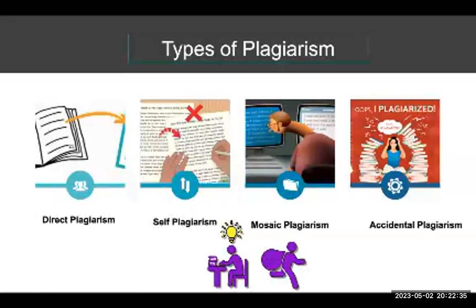The first kind is direct plagiarism. Direct plagiarism is the word-for-word transcription of a section of someone else's work without attribution and without quotation marks. The deliberate plagiarism of someone else's work is unethical, academically dishonest, and grounds for disciplinary actions including exclusion.